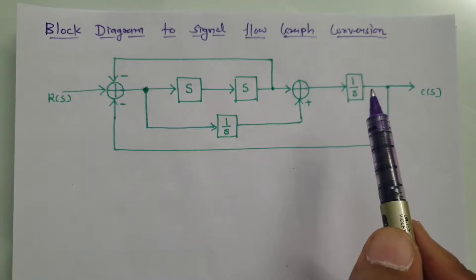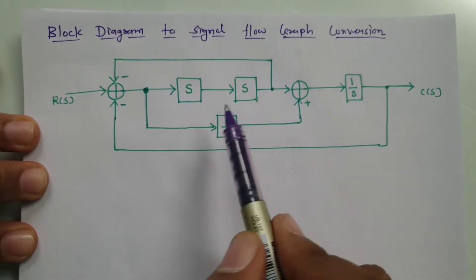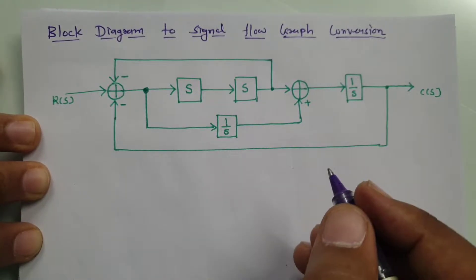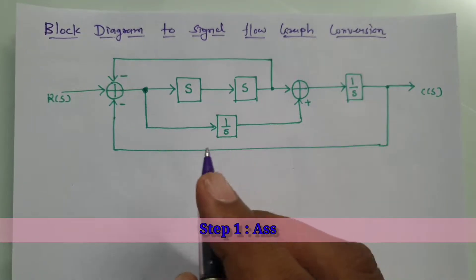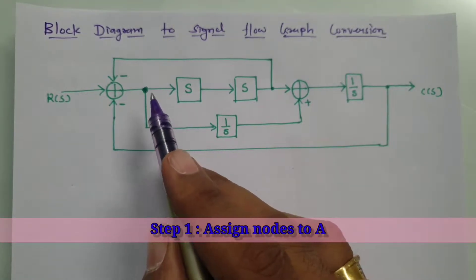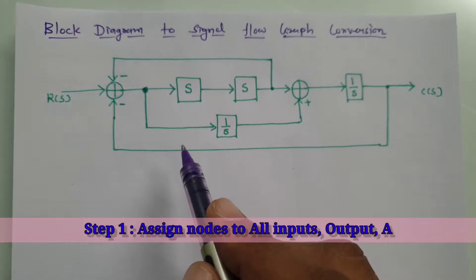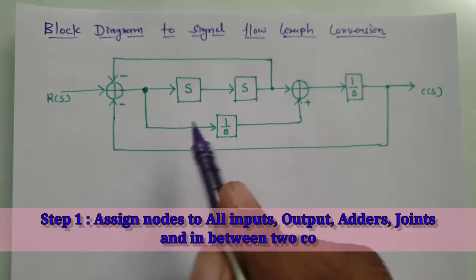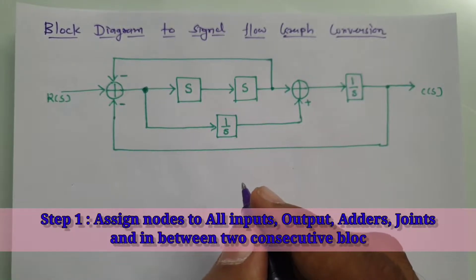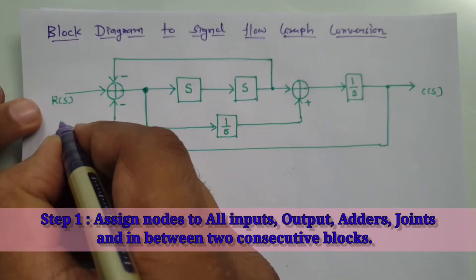Here I'll explain how we can translate a given block diagram into a signal flow graph. First, we need to assign nodes to all inputs, outputs, adders, joints, and in between two consecutive blocks within the given block diagram.